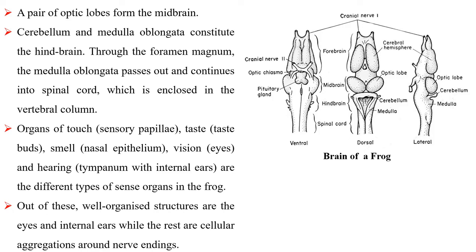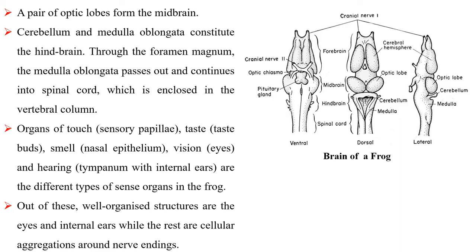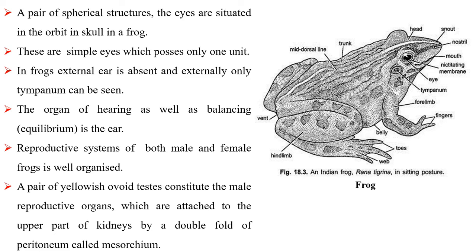Through the foramen magnum, the medulla oblongata passes out and continues into the spinal cord, which is enclosed in the vertebral column. Organs of touch, taste, smell, vision and hearing are the different types of sense organs in the frog. Out of these, well-organized structures are the eyes and internal ears while the rest are cellular aggregations around nerve endings. A pair of spherical structures, the eyes, are situated in the orbit in the skull. These are simple eyes which possess only one unit. The frog's external ear is absent and externally only the tympanum can be seen. The organ of hearing as well as balancing is the ear.